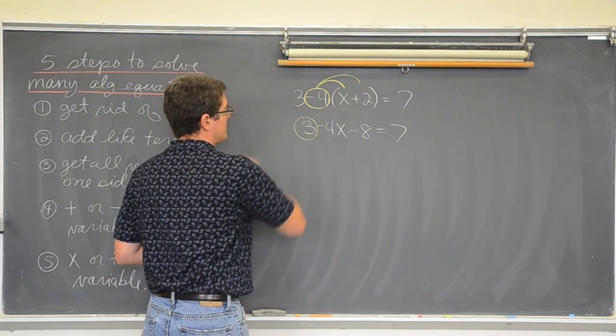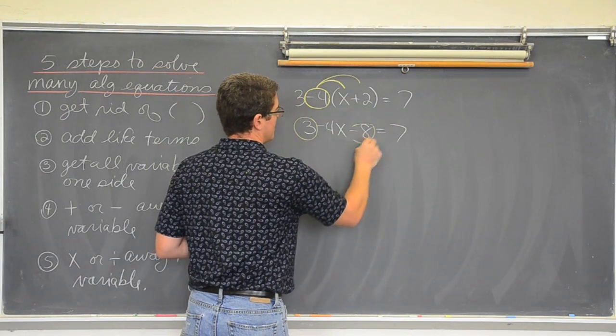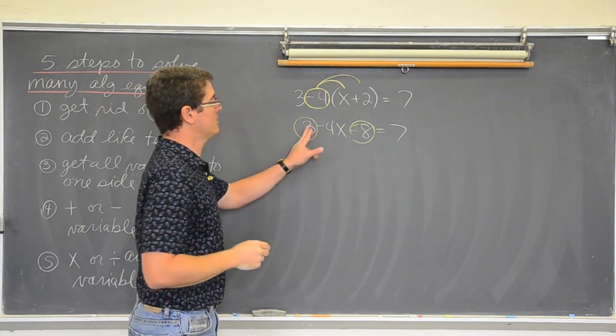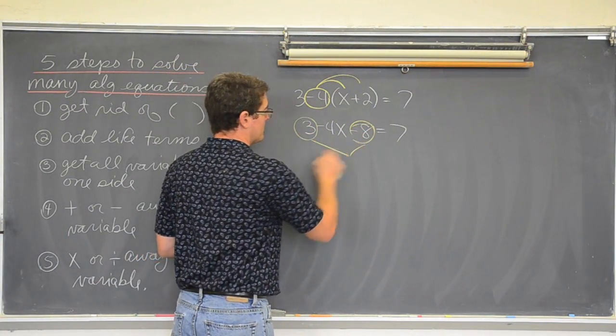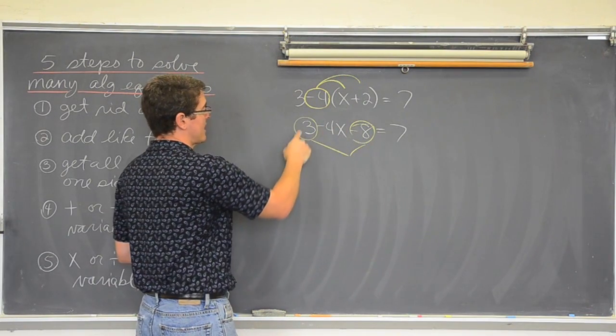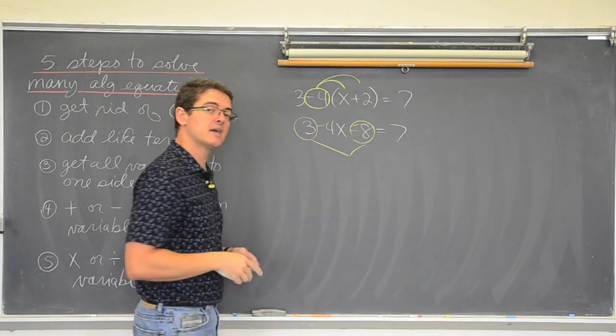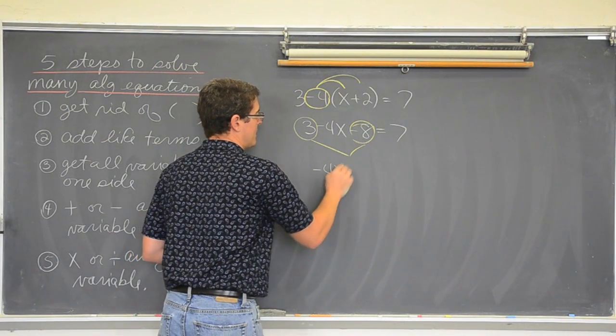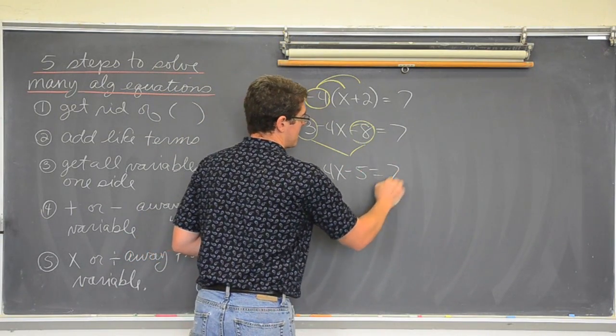This equation has a common like terms of negative 8 and positive 3. Those are going to come together. And the minus sign is for the 4, not the 8. So don't pay attention to that. The 3 is positive, the 8 is negative. 3 minus 8 is negative 5. So negative 4x minus 5 equals 7.